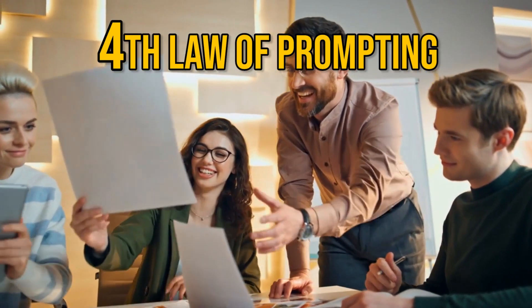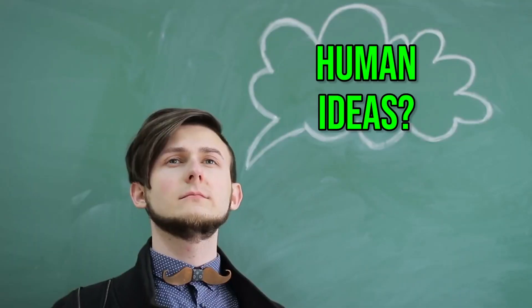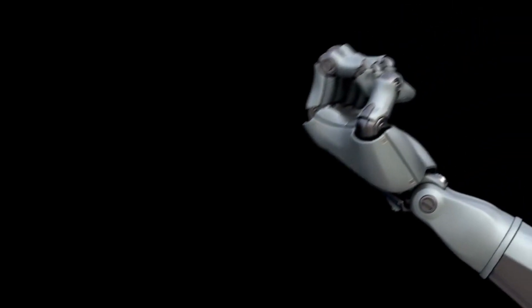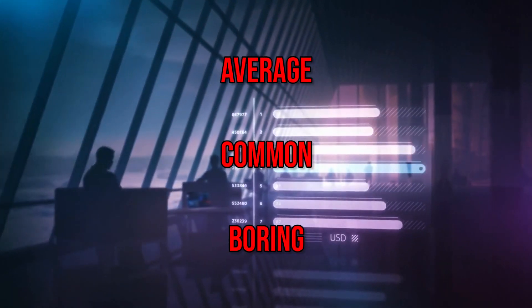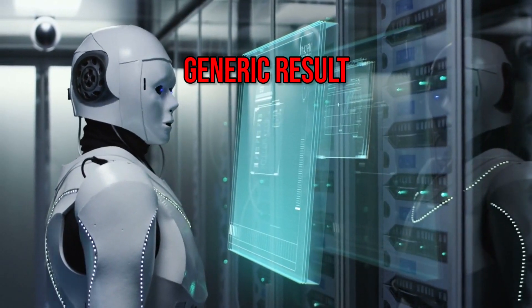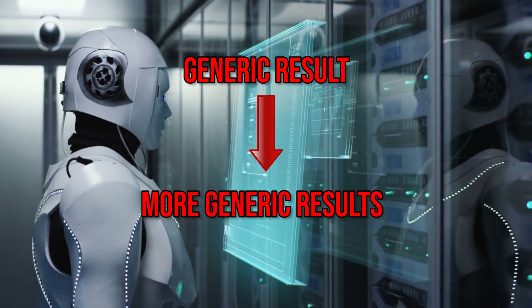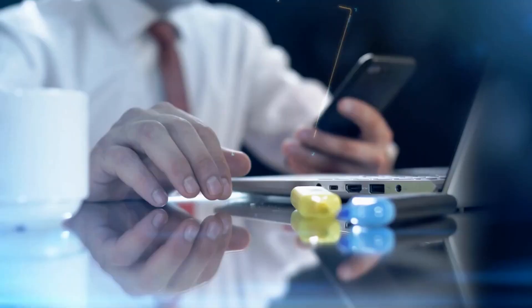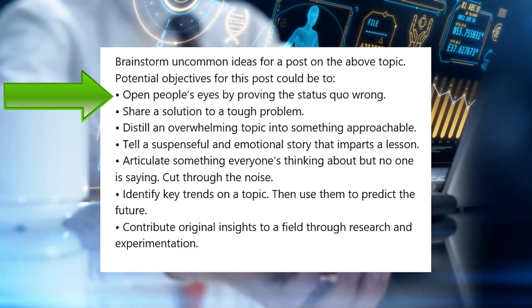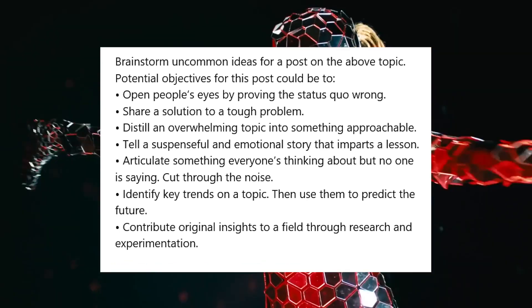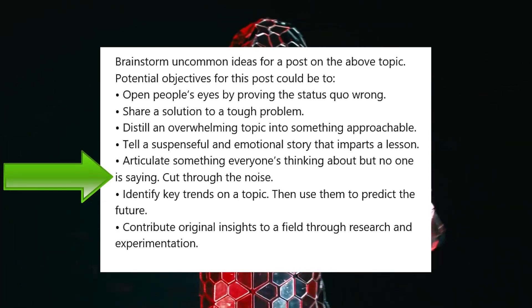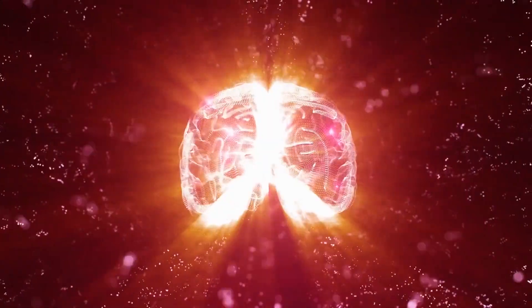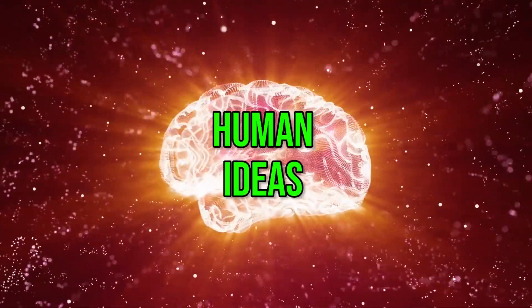The fourth law of prompting: a great prompt is sourced from human ideas. What most people don't know about AI is that it's designed to come up with the highest probability answer — average, common, and even boring content. So instead of asking AI to come up with its own generic understanding of your topic, we gave AI a list of ideas that came from humans and asked it to create variations based on that. For example, we told AI that uncommon post ideas could be: proving the status quo is wrong, sharing a solution to a tough problem, or telling a suspenseful and emotional story. This is us training AI to think more like a human being so that the output has more humanness in it.